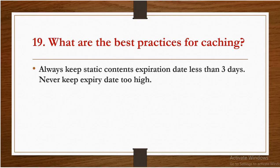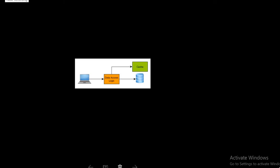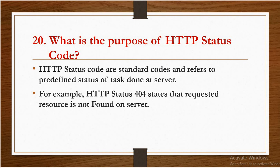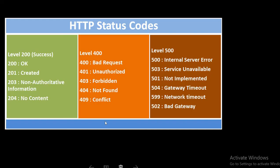Best practices for caching: always keep static content expiration date less than 3 days; never keep the expiry date too high. The last important question is: what is the purpose of HTTP status codes? HTTP status codes are standard codes that refer to predefined statuses of tasks done at the server. For example, HTTP status 404 states that the requested resource is not found on the server. There are multiple HTTP status codes supported by RESTful web services API.